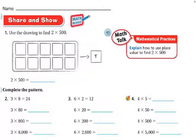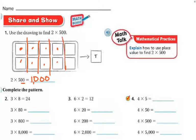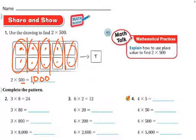So use the drawing to find 2 times 500. Well, 2 times 5 is 10, and then we have our two 0s, so we're going to get 1,000. If we look at the drawing, each box represents 100. We want 2 groups, in groups of 5: there are 5 groups and there are 2 hundreds in each group. When you add them up — 1, 2, 3, 4, 5, 6, 7, 8, 9, 10 — which is 1,000. So 2 times 500 is 1,000.